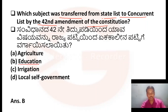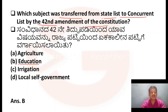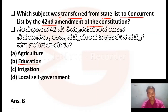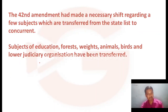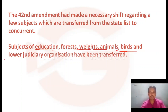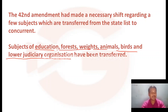The right answer for this question is Option B — Education. According to the 42nd Amendment, the subject transferred from state list to concurrent list is Education. The 42nd Amendment made a necessary shift regarding a few subjects. The subjects transferred from state list to concurrent list are: education, forests, weights, animals, birds, and lower judiciary organization.